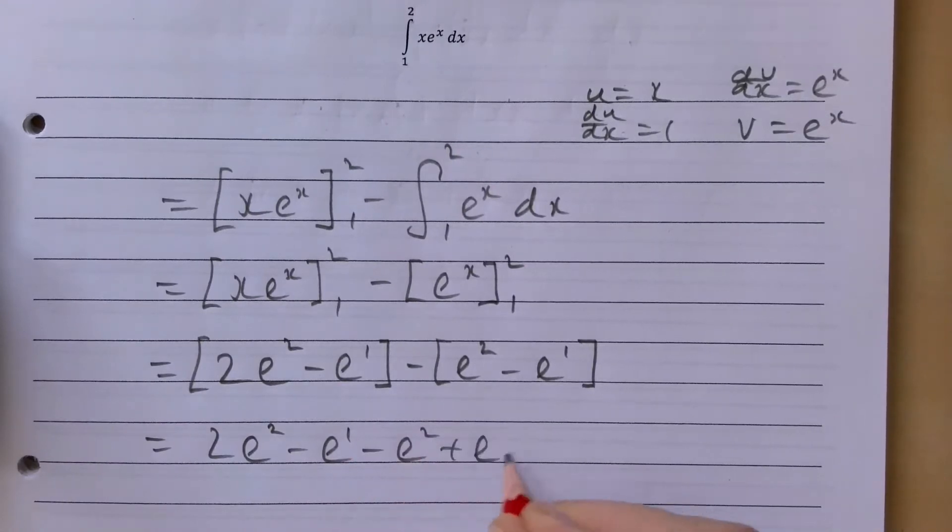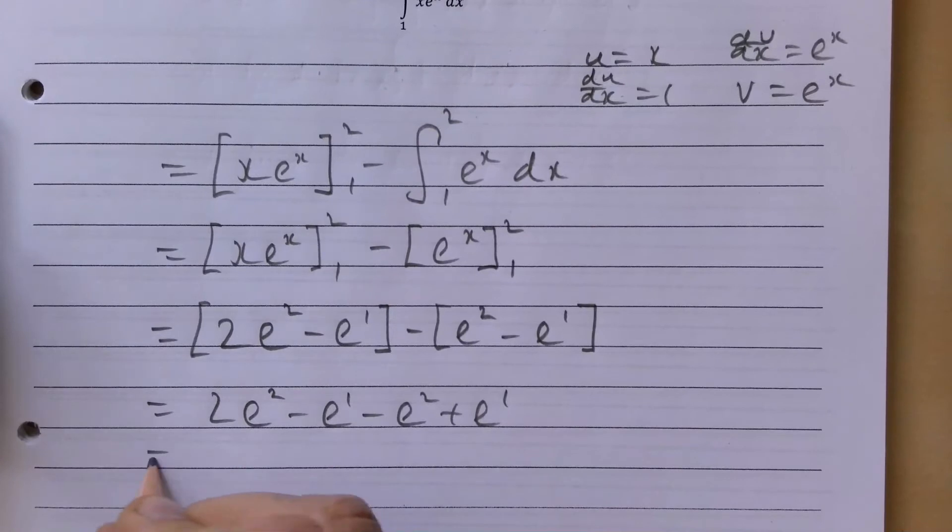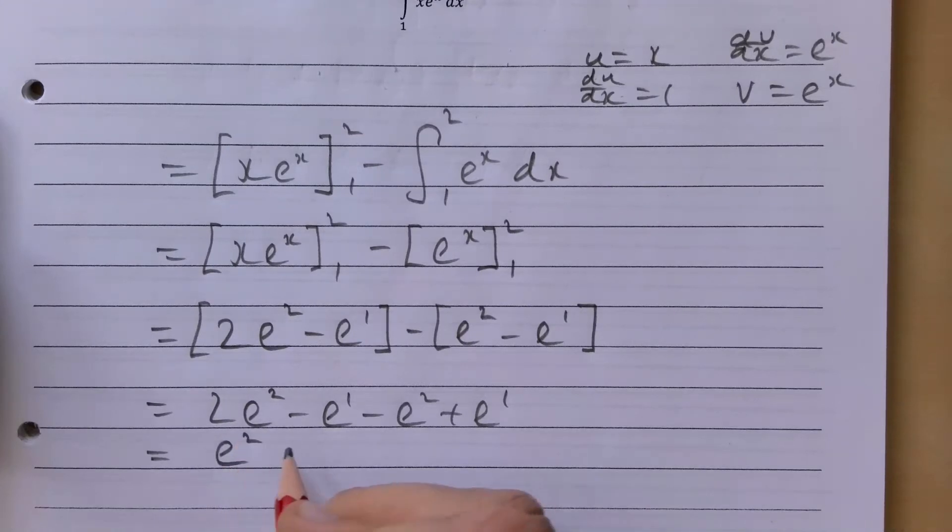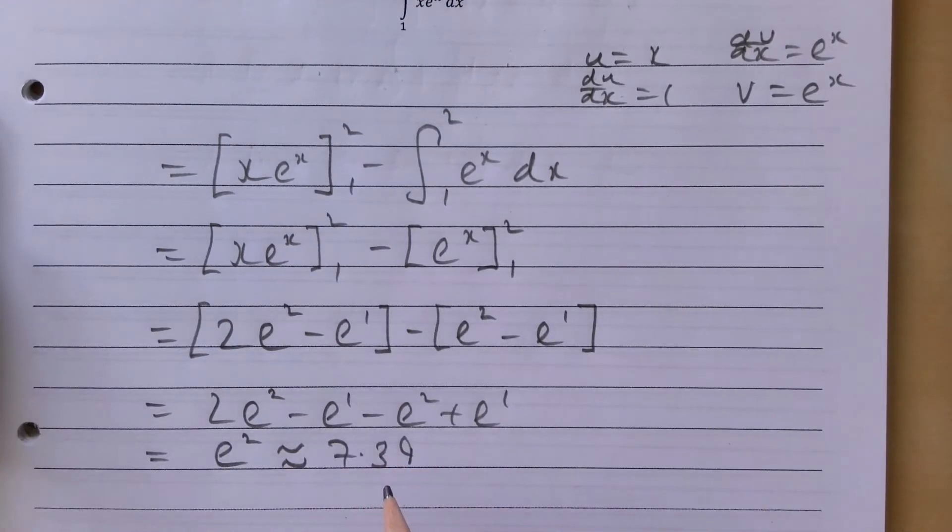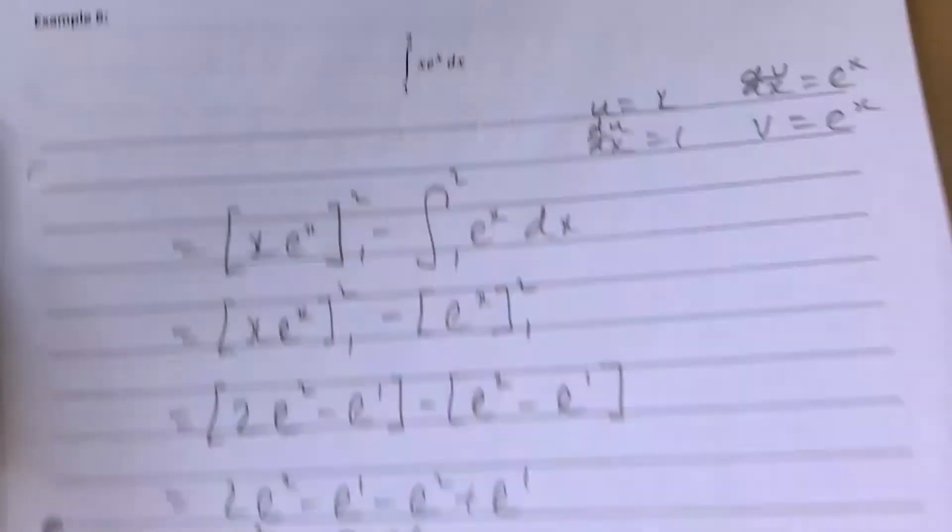Just leaves us with e squared. I think that's approximately 7.3. And let's take a look down to our second example.